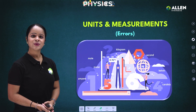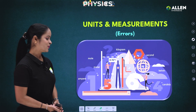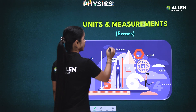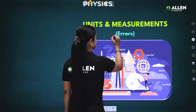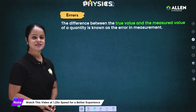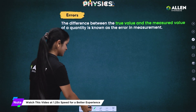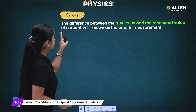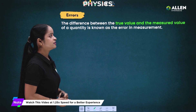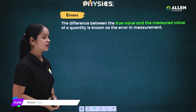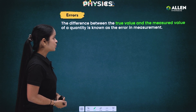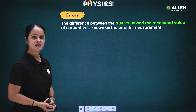The very first question that would be coming in your mind: what is the proper definition of errors? The difference between the true value and the measured value of a quantity is known as the error in measurement.